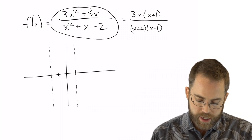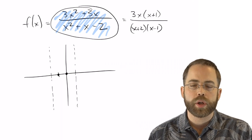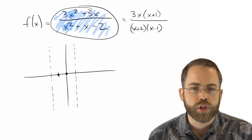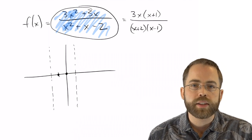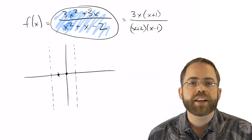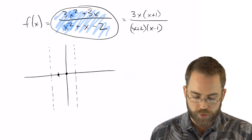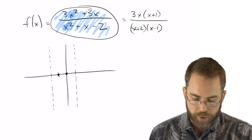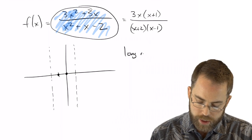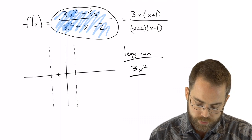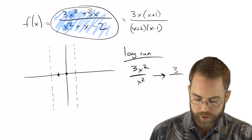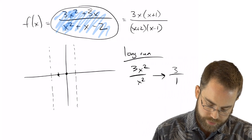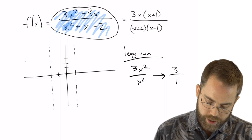Looking at the original function again — who's going to win? The top has x-squared and so does the bottom. That's the evenly matched case, so we look at the coefficients. In the long run, nothing grows as fast as the x-squared terms; the 3x or x terms don't matter. So ultimately we're looking at 3x-squared over x-squared, which is basically 3 over 1. In the long run, this tends towards 3, giving a horizontal asymptote at y=3.